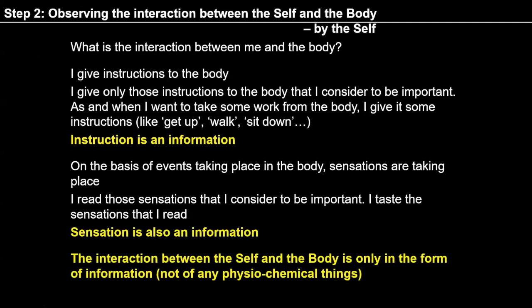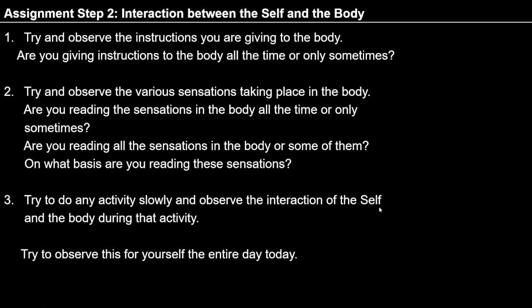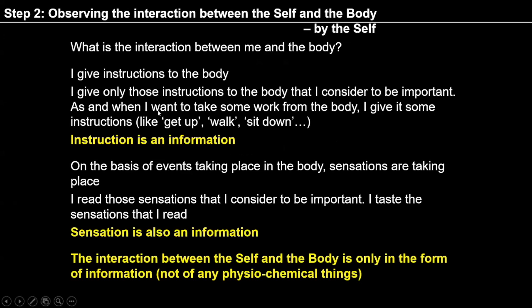When I am able to see these two realities, then in step 2 I am observing interaction between the two. By observation I can see that the interaction between me and body is taking place in the form of information. I read sensation if I think it is important to read; I give instruction to body if I think it is important to give instruction. So the interaction between the two is in the form of information — exchange of information is taking place between me and body.